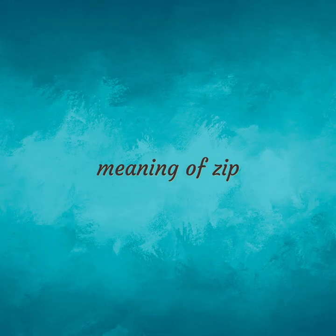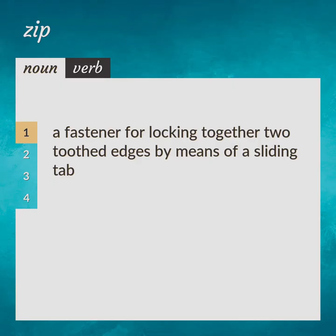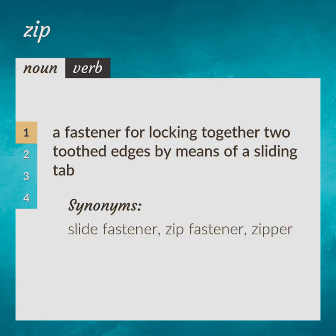Meaning of Zip. A fastener for locking together two-toothed edges by means of a sliding tab. Synonyms: slide fastener, zip fastener, zipper.